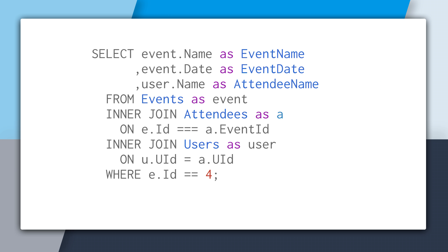If you want to get a list of attendees for a given event, you would write a SQL query that looks like this. Here we're joining all three tables to get the relevant data needed for this query. We're joining using foreign keys — attendees is joined to events using the event ID key, and users is joined using the UID key.